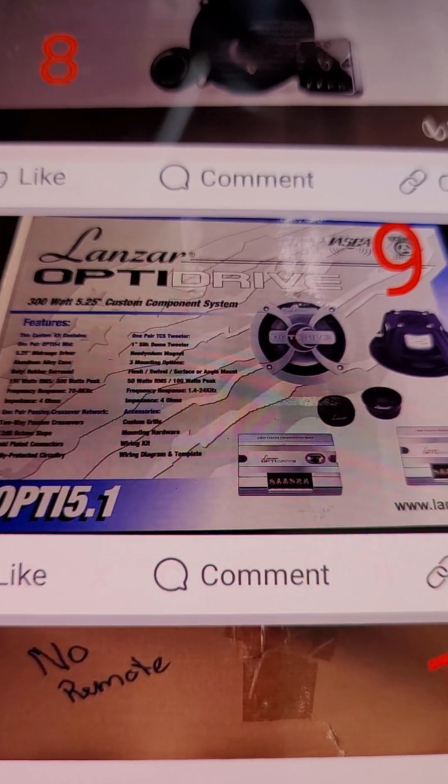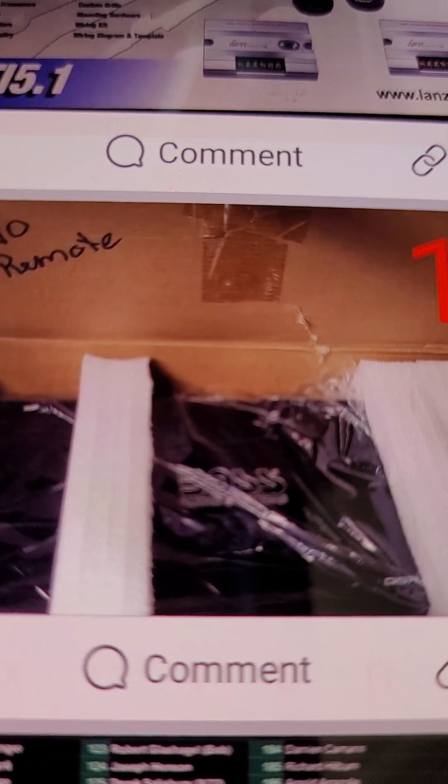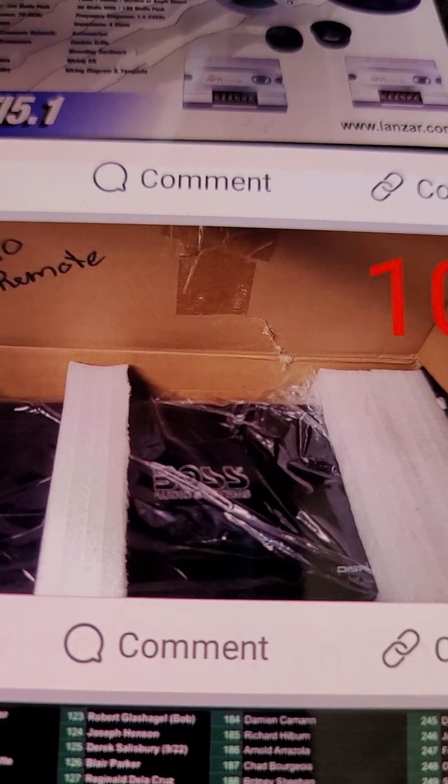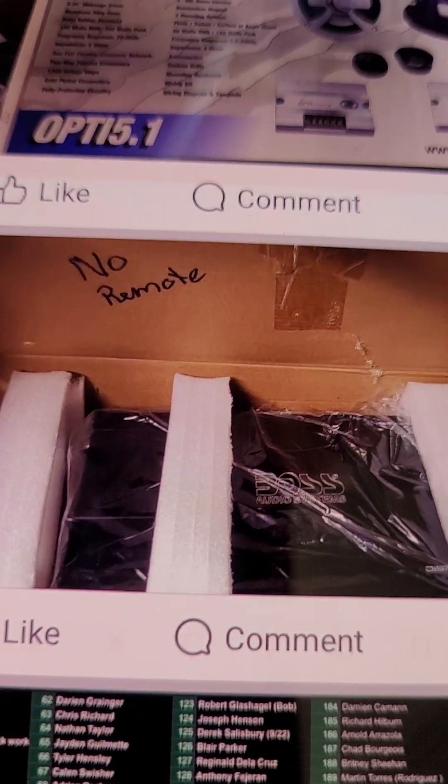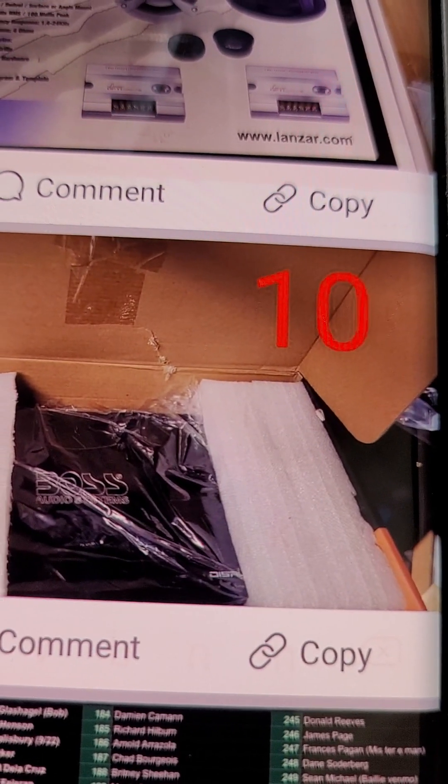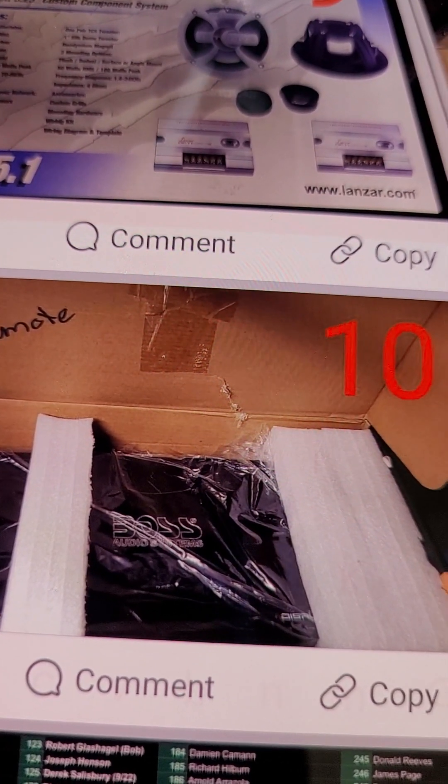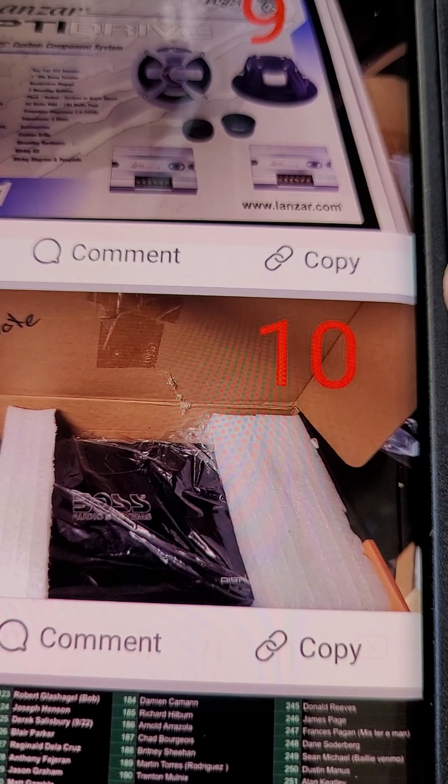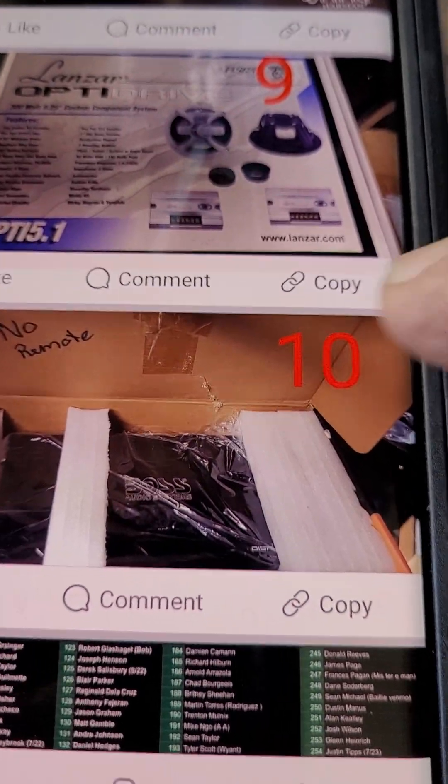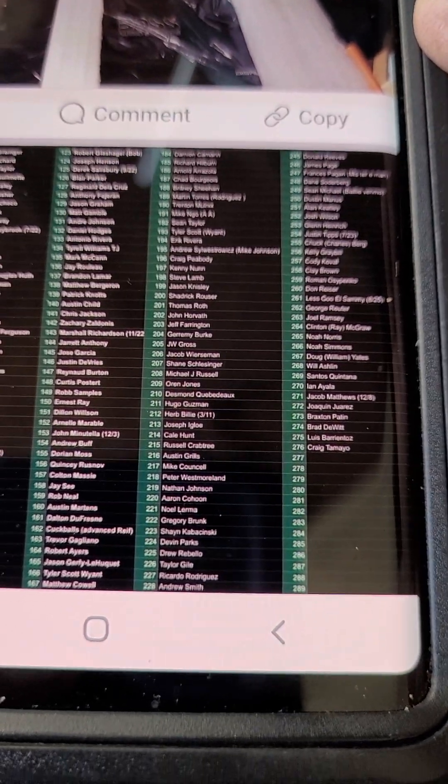Number eight is a component set, Infinity Primus five and a quarter. Number nine is a component set, Lanzar Opti Drive five and a quarter. And number ten is a Boss 3K amp in the incorrect box with no remote, but it is a new or like new amplifier. Says it's three thousand watts, but we all know that's probably whatever, five, six hundred watts, but it's free.